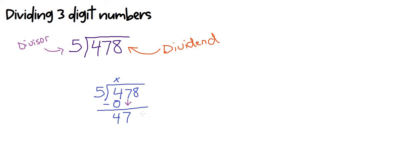Now the next number we're trying to divide is 47. How many times can five go into 47? This is where it's really important that you know your multiplication facts. We know five times eight is 40, five times nine is 45, and five times ten is 50. So the closest number is nine. Nine times five is 45. Then we subtract: seven minus five is two and four minus four is zero.